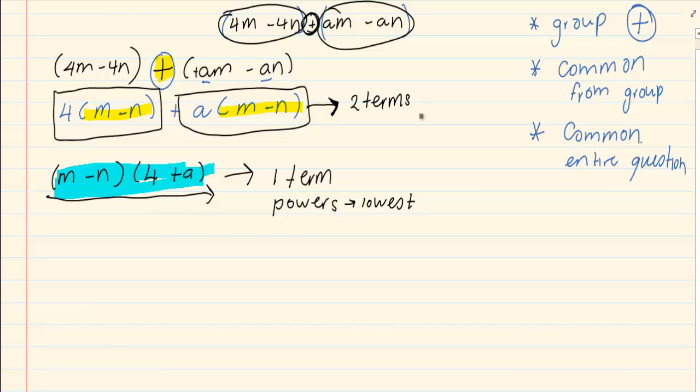Let us do the following example: a squared b minus a squared d minus p squared b plus p squared d. Now, if you look at the entire question, there is no common. Number two, it is not a trinomial or difference of two squares. So what I'm going to do is group.